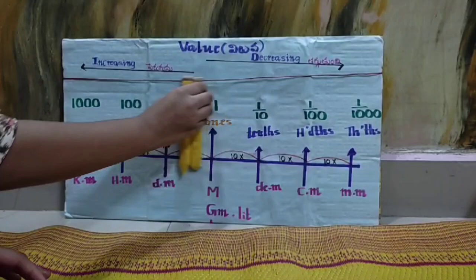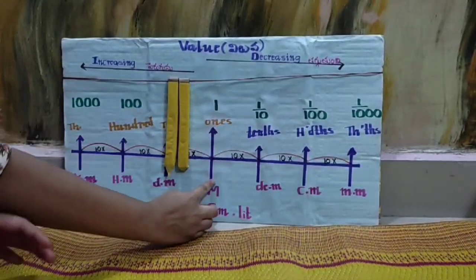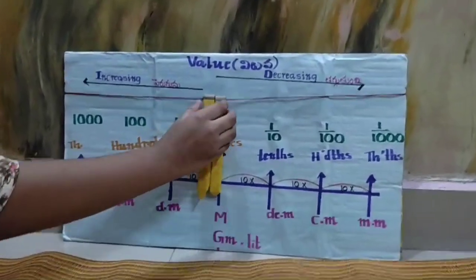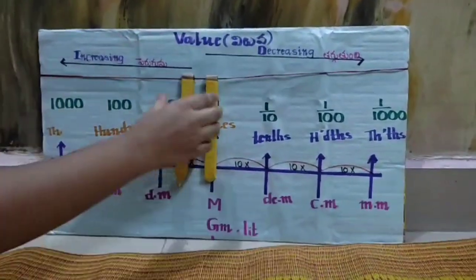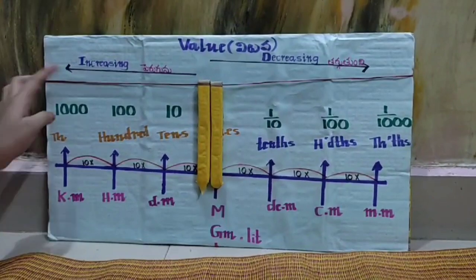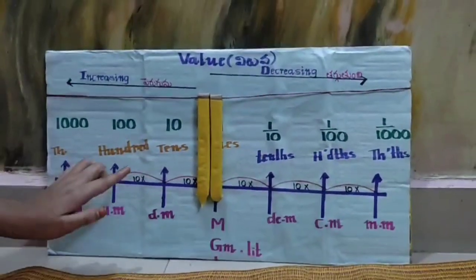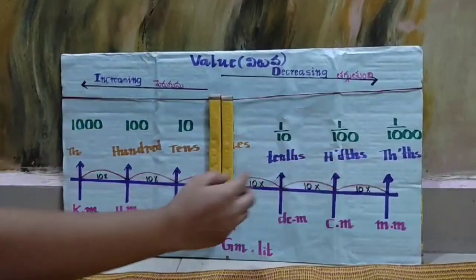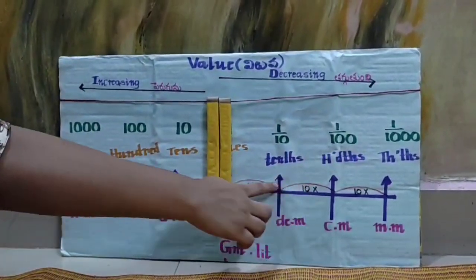First, this is a number line. At the number line, the middle is the 1's place. The left side of the 1's place is increasing 10 times from one place to another place. And the right side is decreasing one place to another place 10 times.